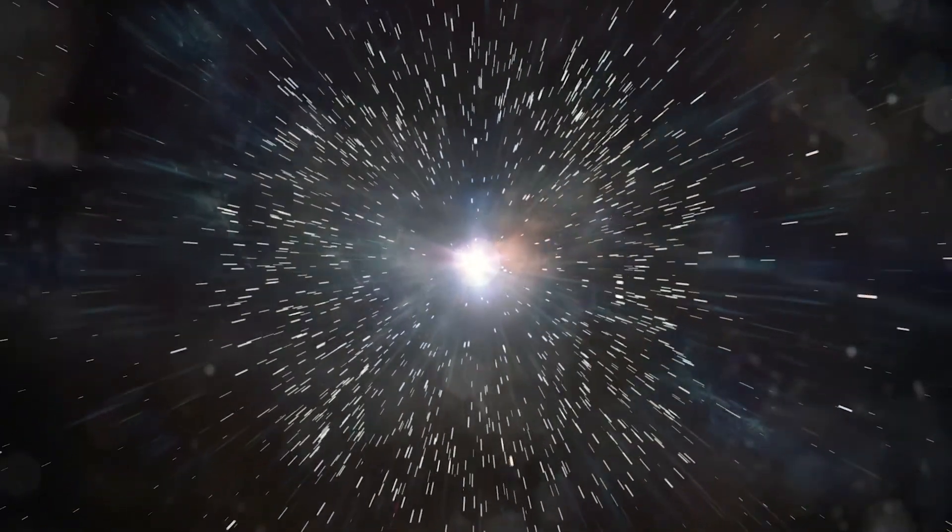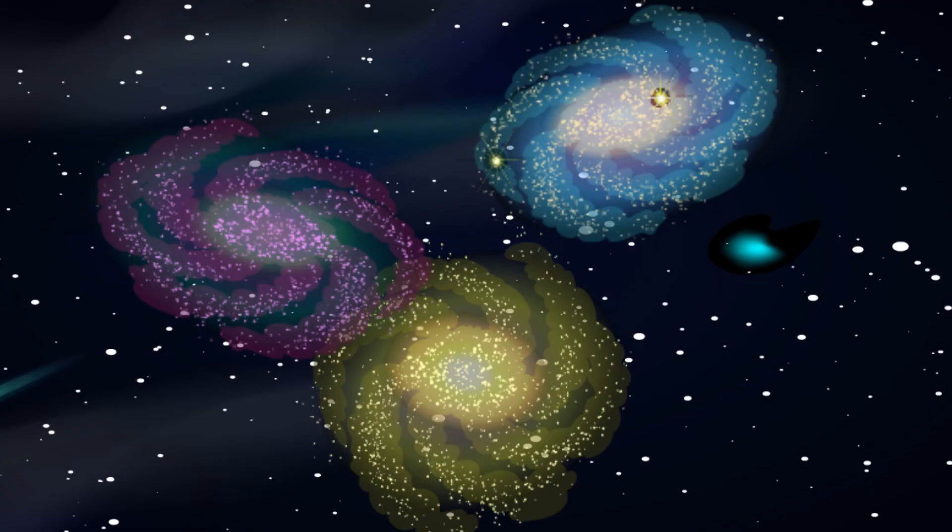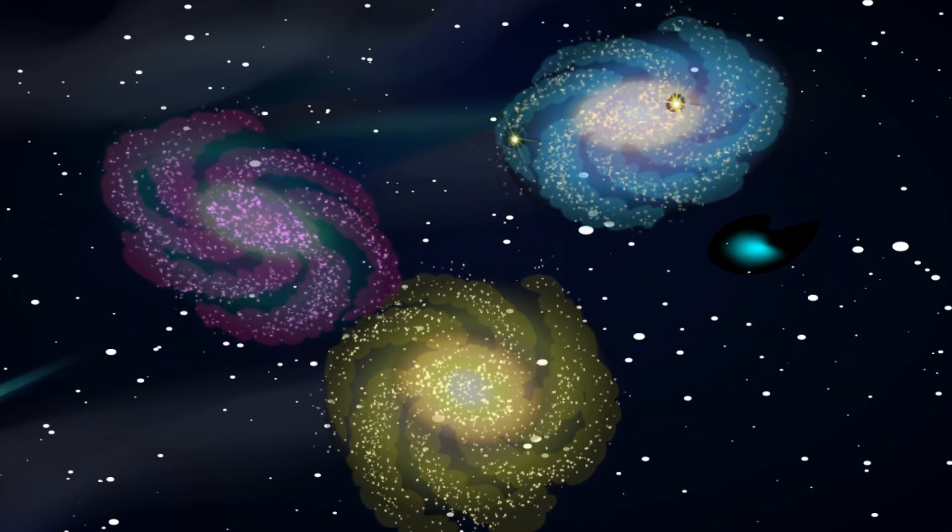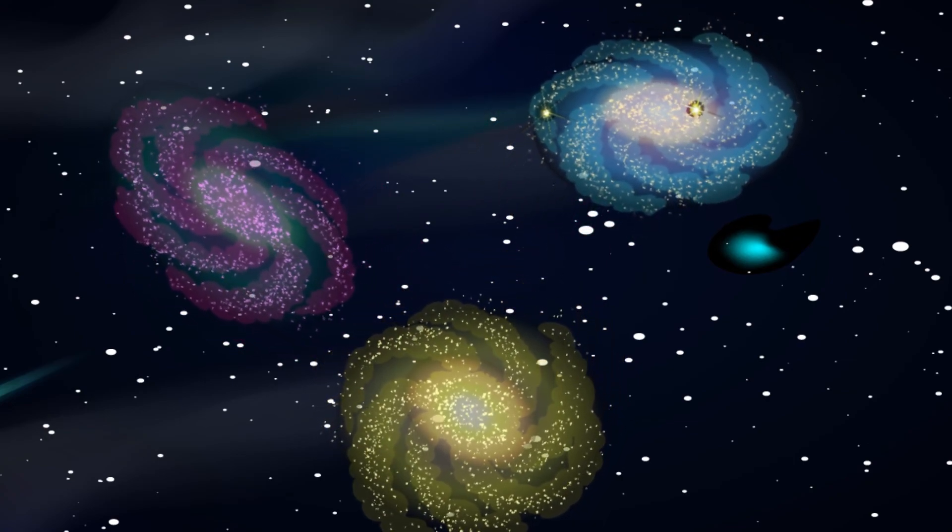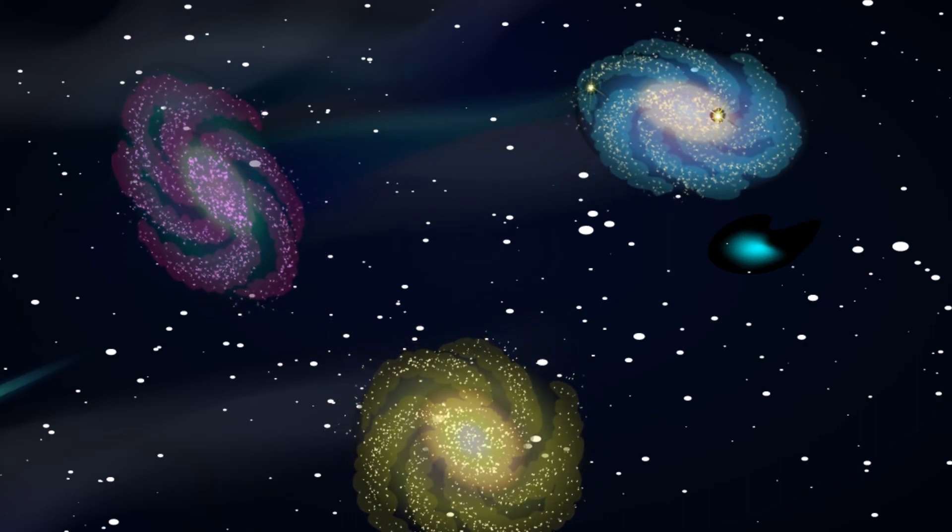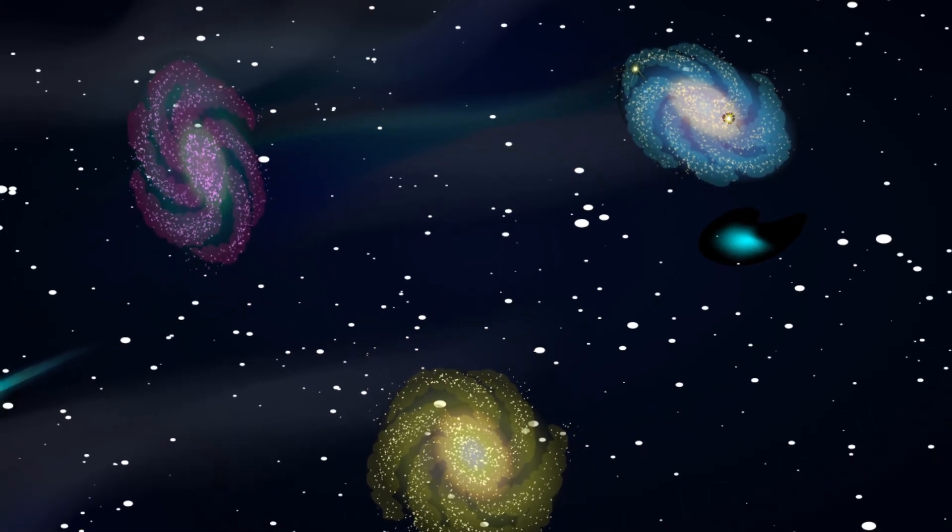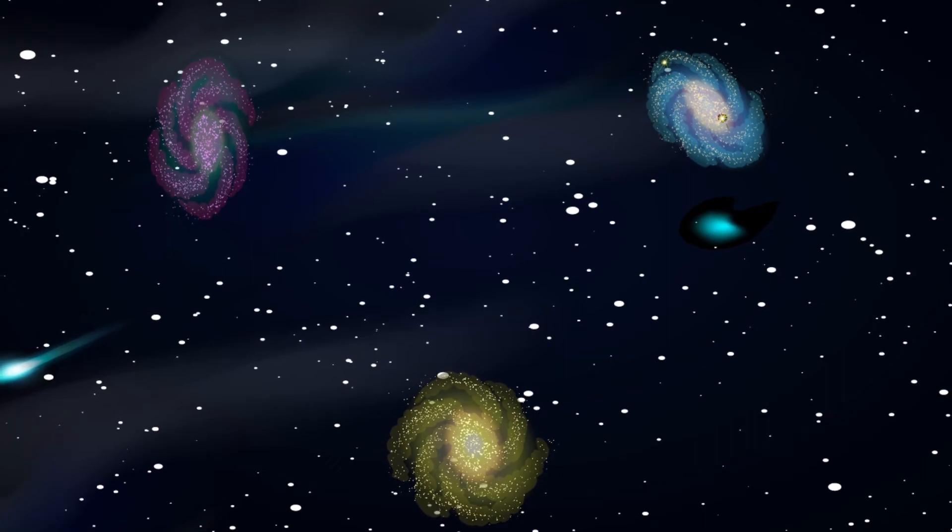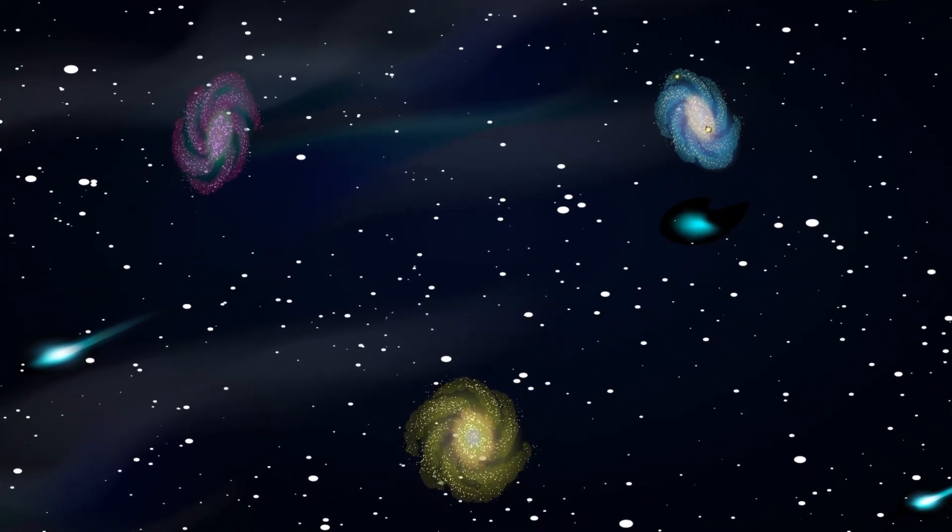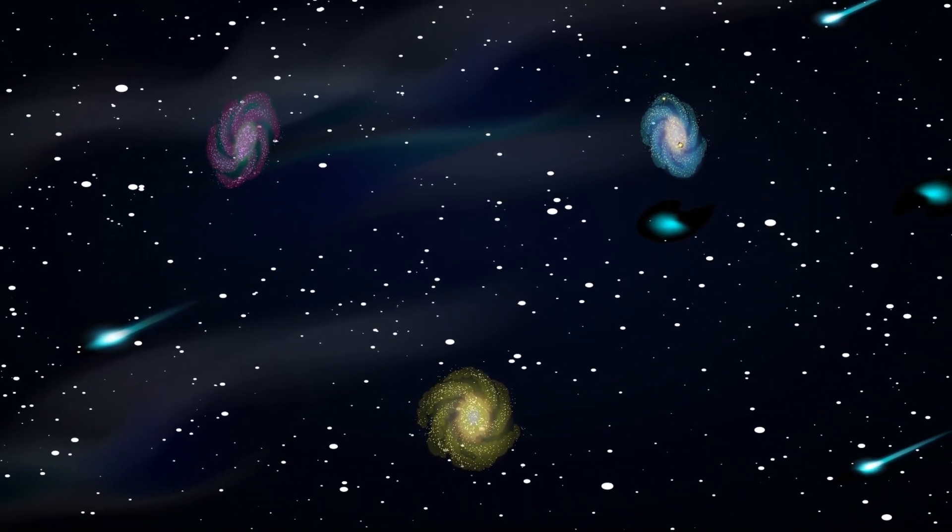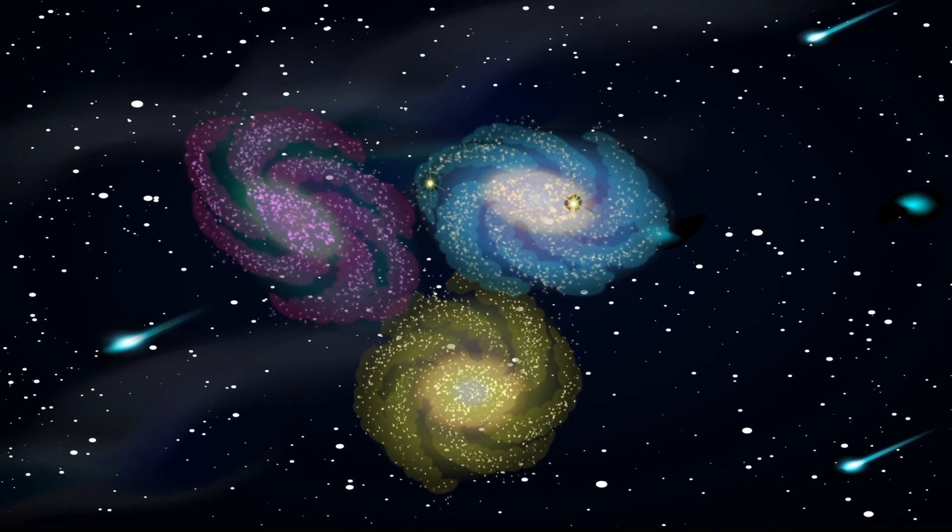Around the same time when Big Bang theory was introduced, Edwin Hubble made a very interesting observation. He noticed that other galaxies were moving away from us in all directions. Not only that, but the farther apart galaxies from us were moving faster away. It showed that the universe was still expanding. If things are moving apart, it stands to reason that they were once close together.